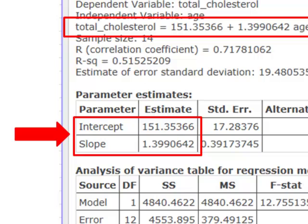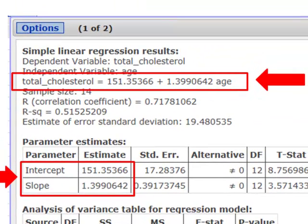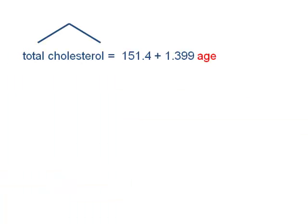Now a common use for this kind of regression model is to use the model for prediction. Let me use this model to predict the total cholesterol for a 42-year-old woman. So here's our regression equation. It's total cholesterol hat, and remember that hat represents the fact that this is going to be a predicted value. It's the predicted total cholesterol for a 42-year-old woman.